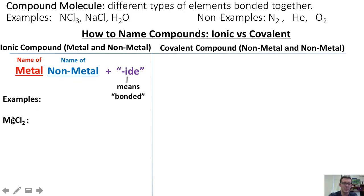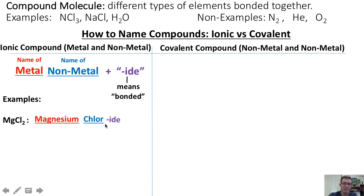For instance, if chemists wanted to name a molecule of MgCl₂, they would first say the name of the metal, magnesium, followed by the name of the nonmetal, chlorine, and then add the suffix "-ide" to show that the magnesium and the chlorine have been bonded together. So the name of this molecule would be magnesium chloride.